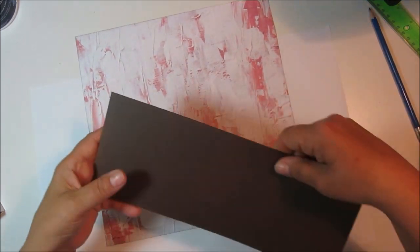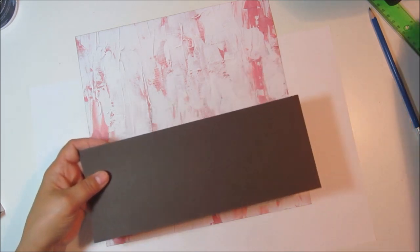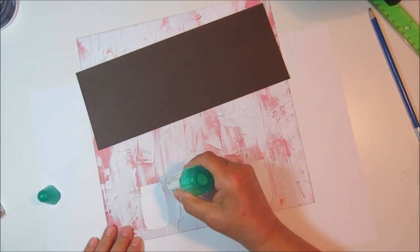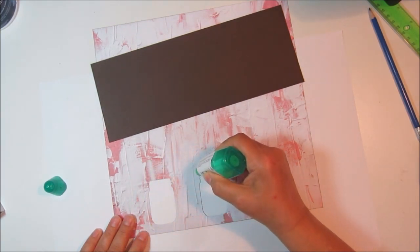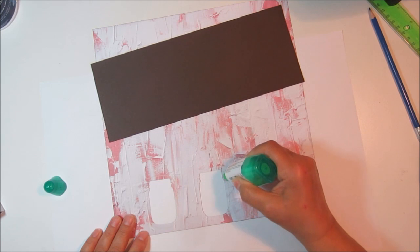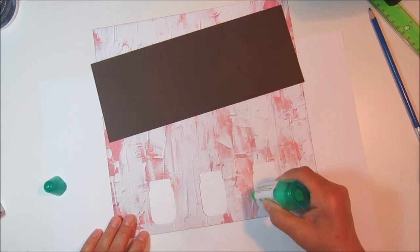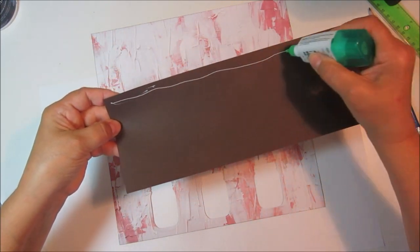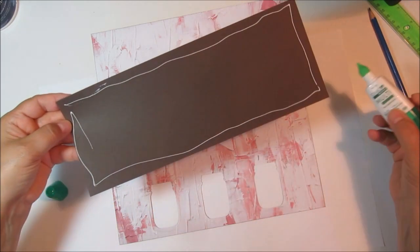I took a piece of cardstock, this is just a half a sheet so 11 by four and a quarter, and I wanted my DSP a little more stable so I just tried to get as close to the jar as I could.